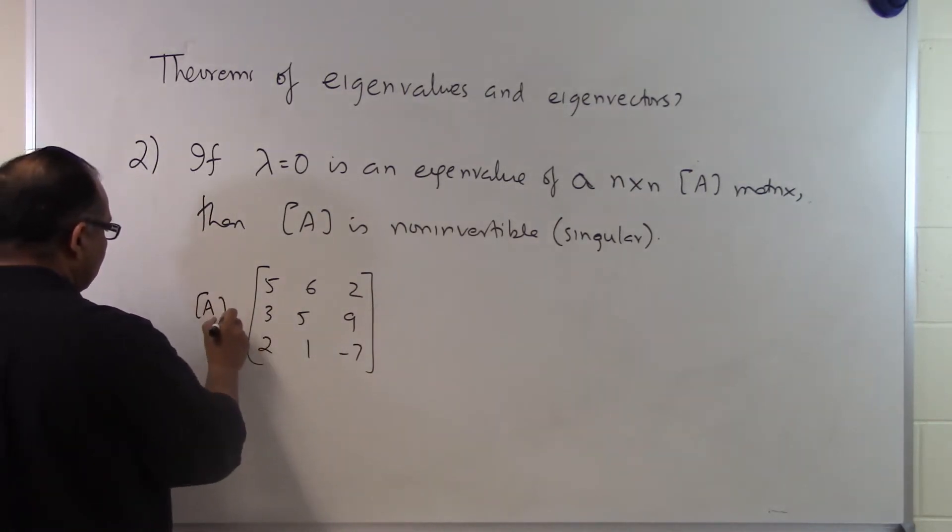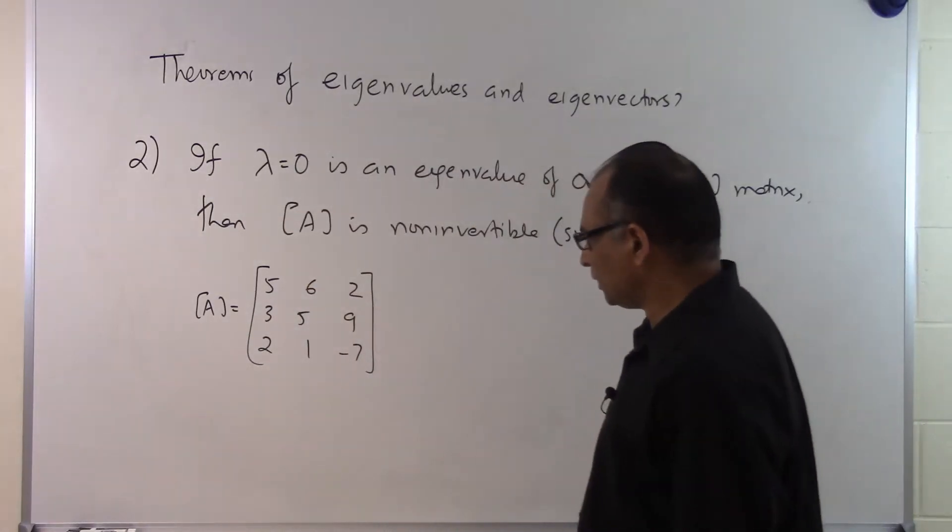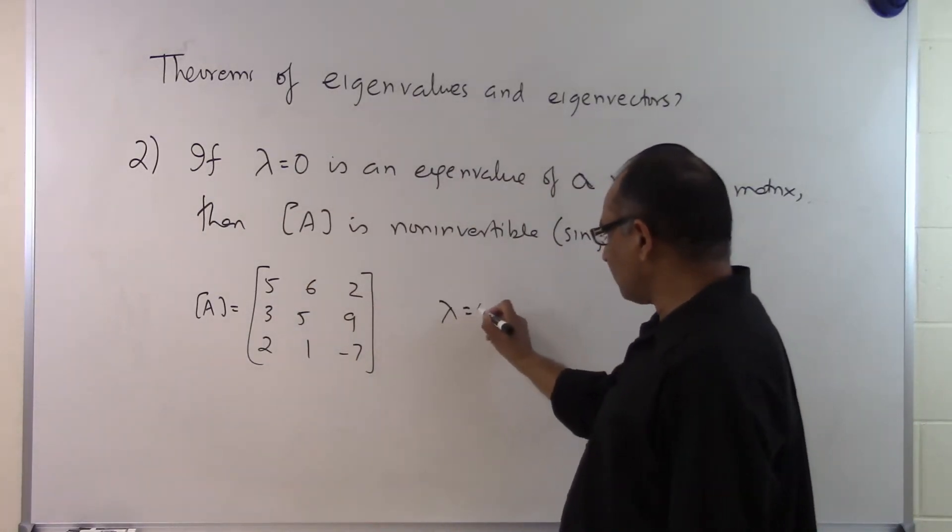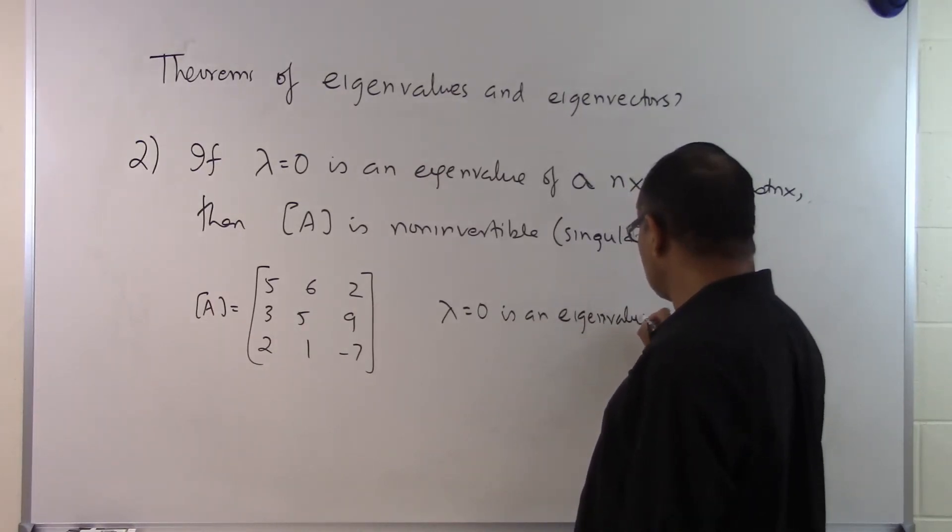For this particular matrix, if you go through the process of finding the eigenvalues you will find lambda equal to 0 is an eigenvalue. You will find one of the eigenvalues is 0.